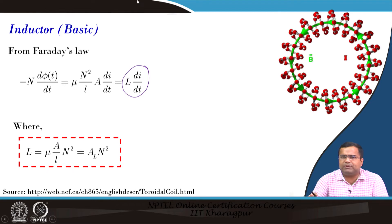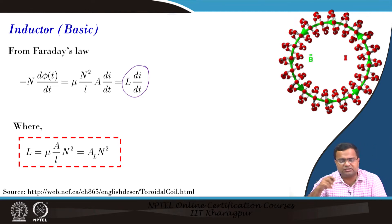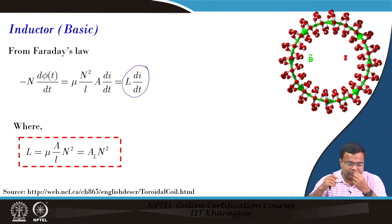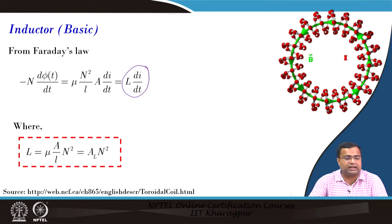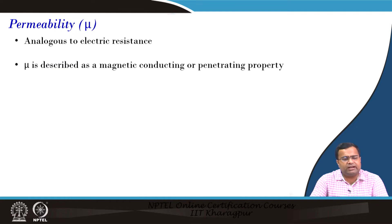These are all the basic formulas for how to design an inductor. You have to take the cross-sectional area and the number of turns of the winding, because you want to wrap the conducting wire on top of a core — whether it is an air core inductor or ferrite core inductor. There are different types of inductors. L is the length of the magnetic circuit, I is the current through the coil, N is the number of turns, L is the inductance, and permeability of the inductance — these are all the basic magnetic circuit parameters.